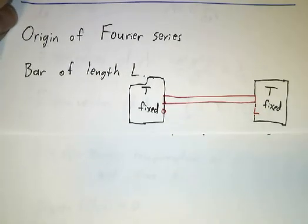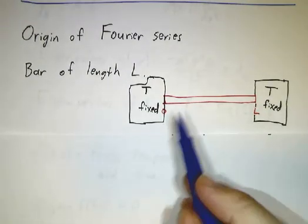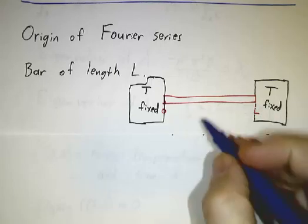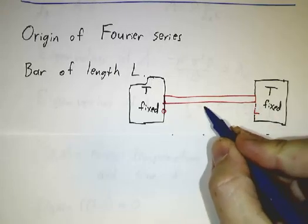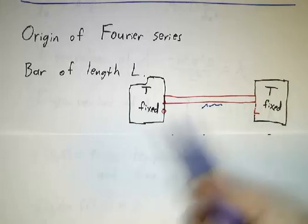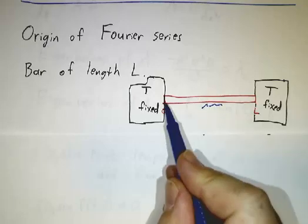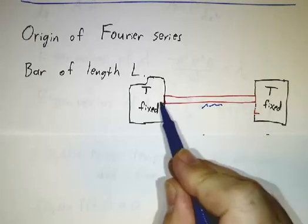Fourier was studying the following problem. Suppose that we have a bar of length L, a metal bar. Maybe you put a match to it and there's a flame that heats up the middle of the bar, so suddenly the center of the bar is really hot, but the ends of the bar are fixed.